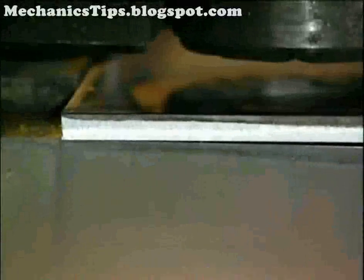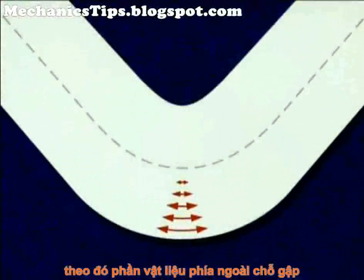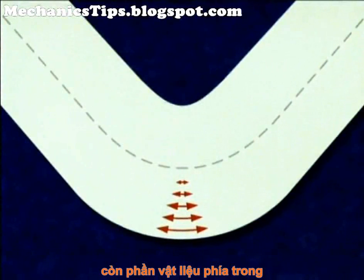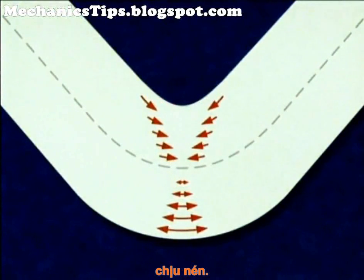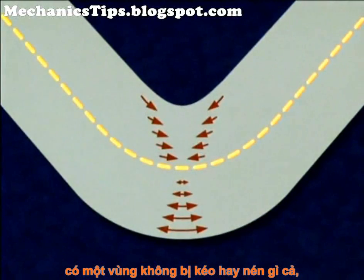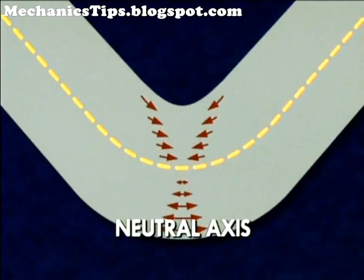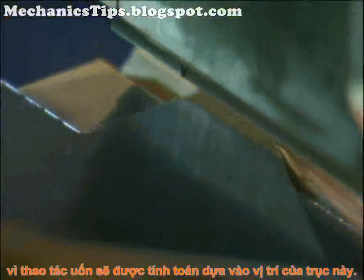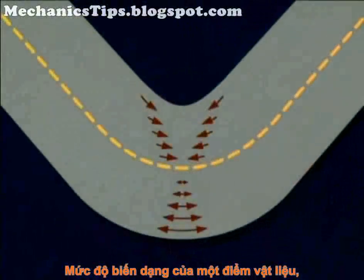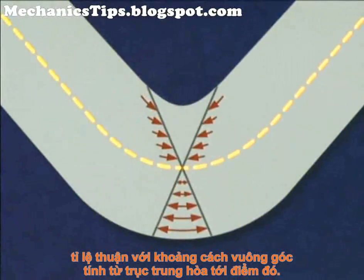In shearing, the forces used are well above the material's tensile strength. As the part is bent, it undergoes a distortion so that the material outside the bend is forced to stretch under tension, and the material inside the bend is forced to compress. Between the tension and compression zones is an area called the neutral axis, where the material is neither forced to stretch nor to compress. The neutral axis is important since bending operations are calculated from its location. The extent to which a material deforms, whether in compression or tension, is proportional to the material's perpendicular distance from the neutral axis.